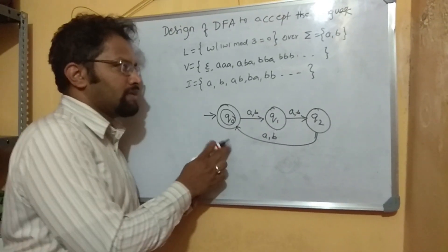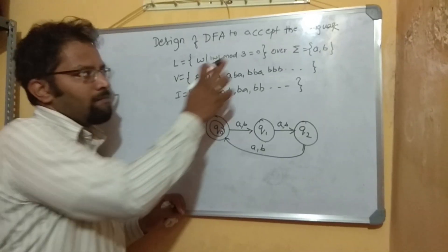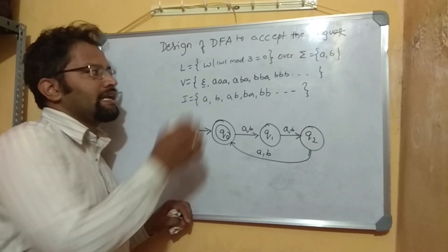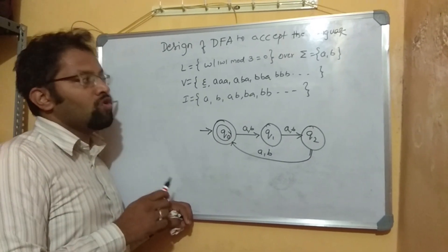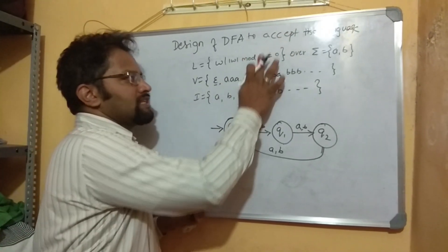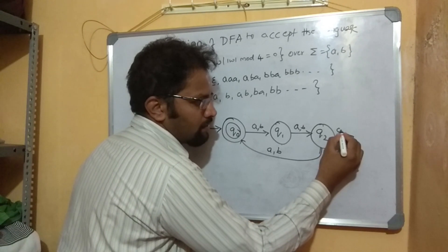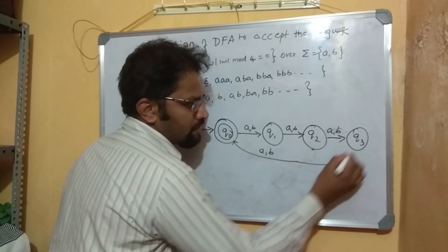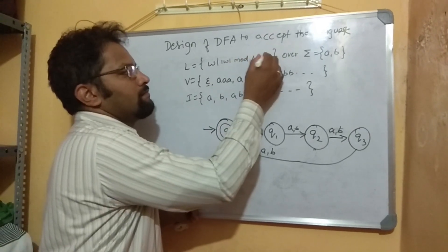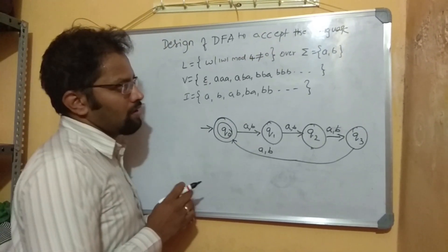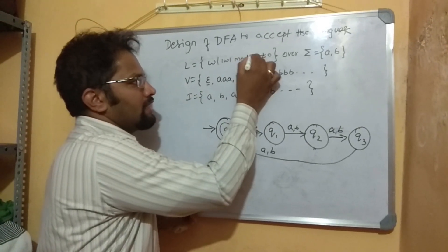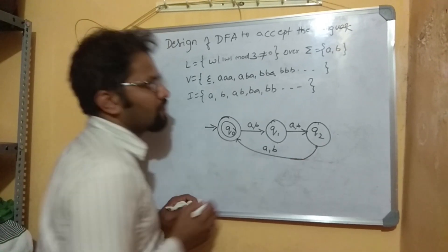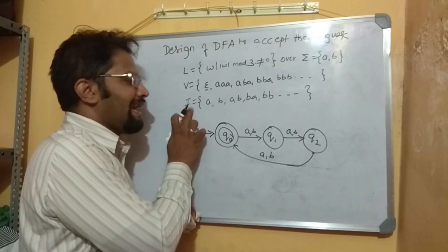So hence I can say number of states depends on the value with which you are taking a mod. Since we say mod 3 it has 3 states, if it is mod 4 it has 4 states. This is all about designing a DFA whenever you talk about number of symbols in a string W divisible by 3. Suppose if you make it as 4 then you can have one more state, say Q3, and extend the transition to that very simple. Suppose if you say not equal then what am I supposed to do?